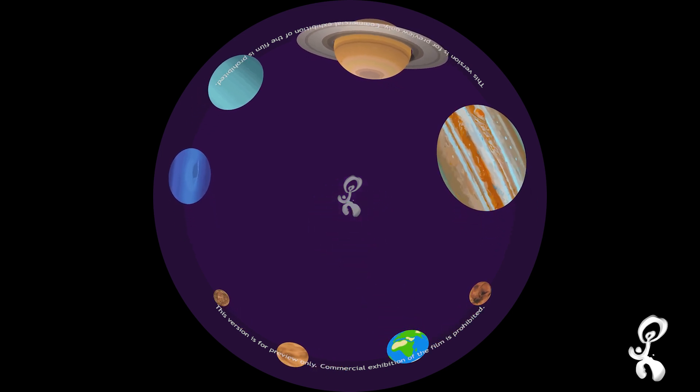The planets are divided into two types. Terrestrial planets and gas giant planets.